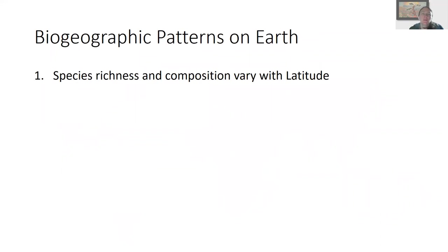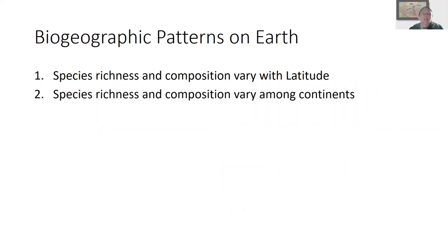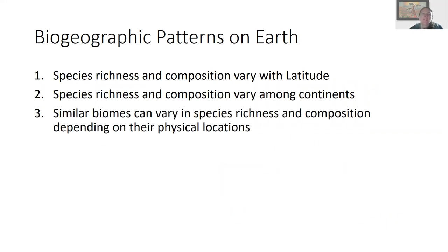What are some of the biogeographic patterns on Earth? First, species richness and composition vary with latitude. Second, species richness and composition vary among continents — we'll talk about why. And finally, you can find similar biomes in different parts of the world, but they can vary in species richness and composition depending on other physical properties of their ecosystems.